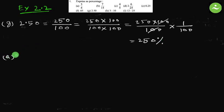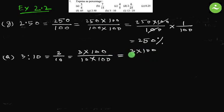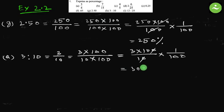Part h: 3 is to 10. This is expressed as a ratio. We convert it to a fraction first: 3 by 10. Then convert the fraction to percentage by multiplying by 1 by 100. Separate 1 by 100: 3 multiplied by 100 divided by 10, multiplied by 1 by 100. Simplify: 100 divided by 10 is 10, so 3 times 10 is 30. The answer equals 30 percent.